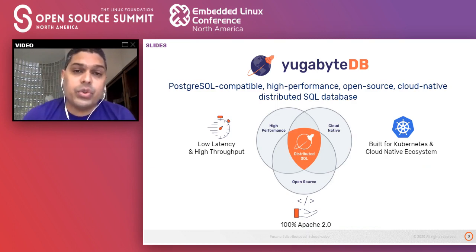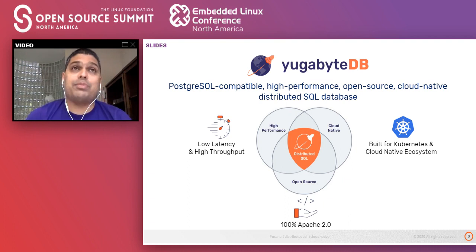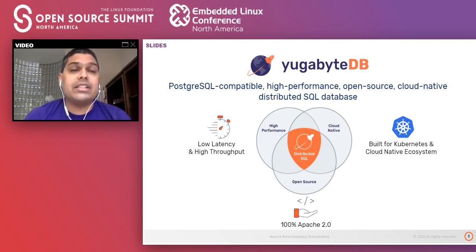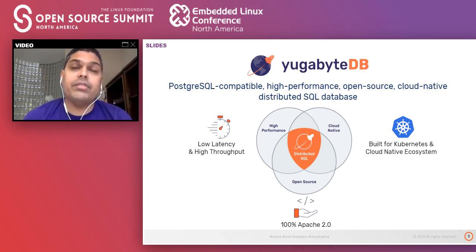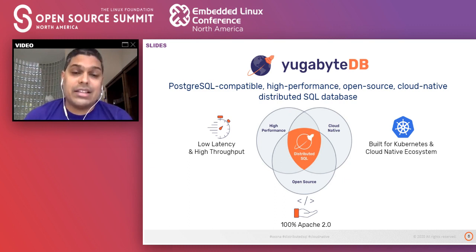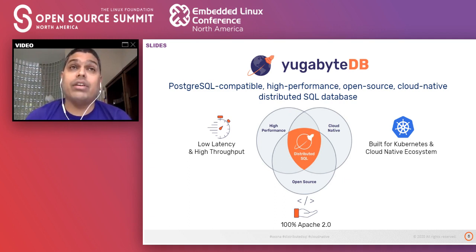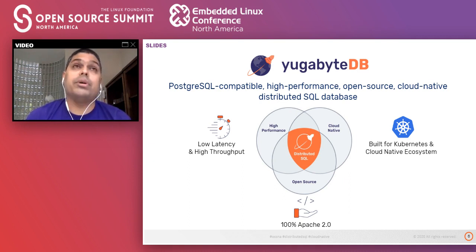With that, I will introduce you to YugabyteDB, a distributed SQL database with its own unique characteristics. First and foremost, it speaks the Postgres SQL language, so it is fully compatible with PostgreSQL drivers and its ecosystem. Secondly, it delivers high performance — both low latency and high throughput as you add more nodes into the cluster. It is built for the cloud-native and Kubernetes ecosystem where infrastructure is highly dynamic and highly failure-prone. And as a database, it has all the built-in guarantees including ACID compliance to ensure you do not ever lose data. Last but not the least, it is a 100% open source database distributed under the permissive Apache 2.0 license.